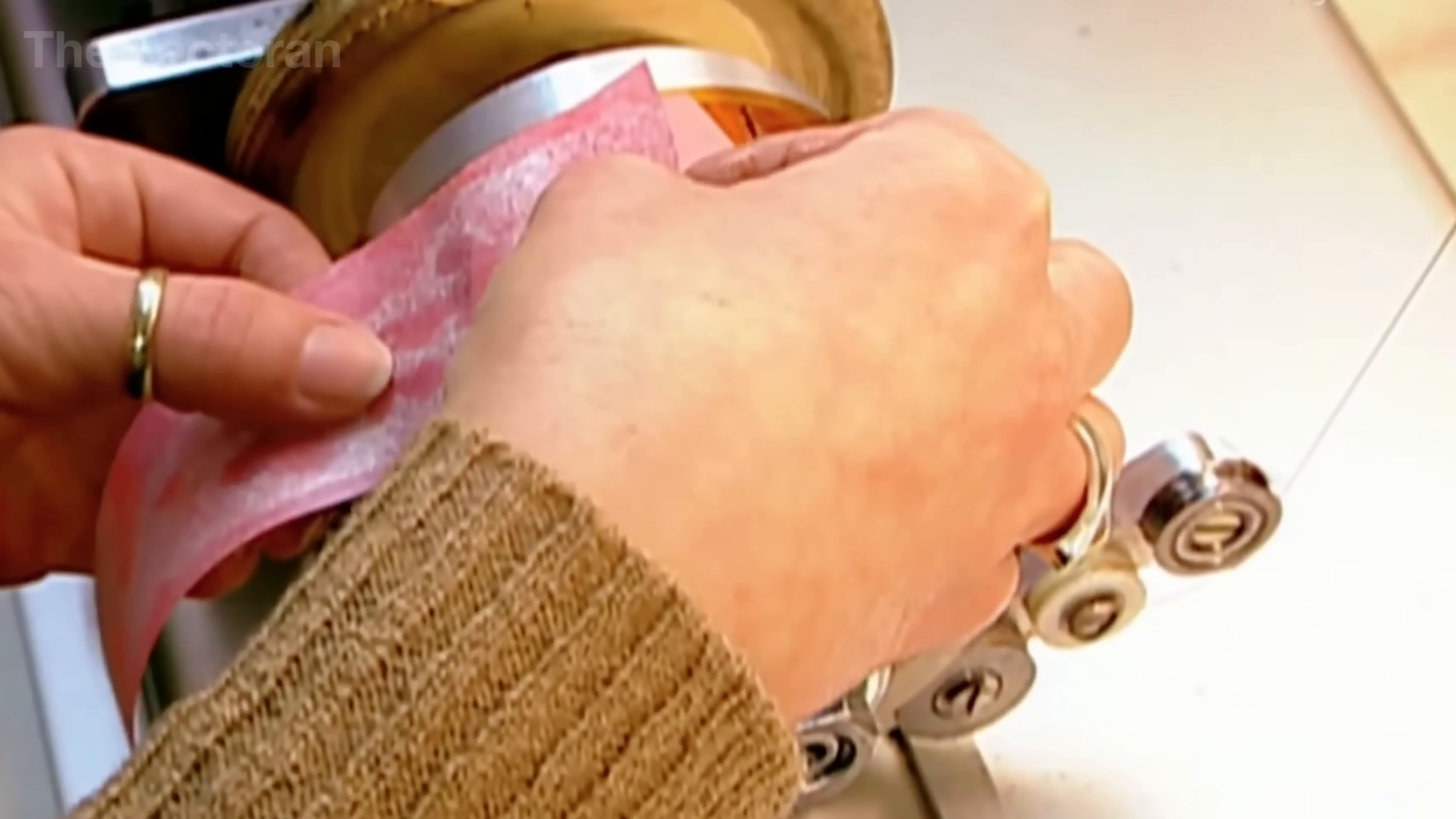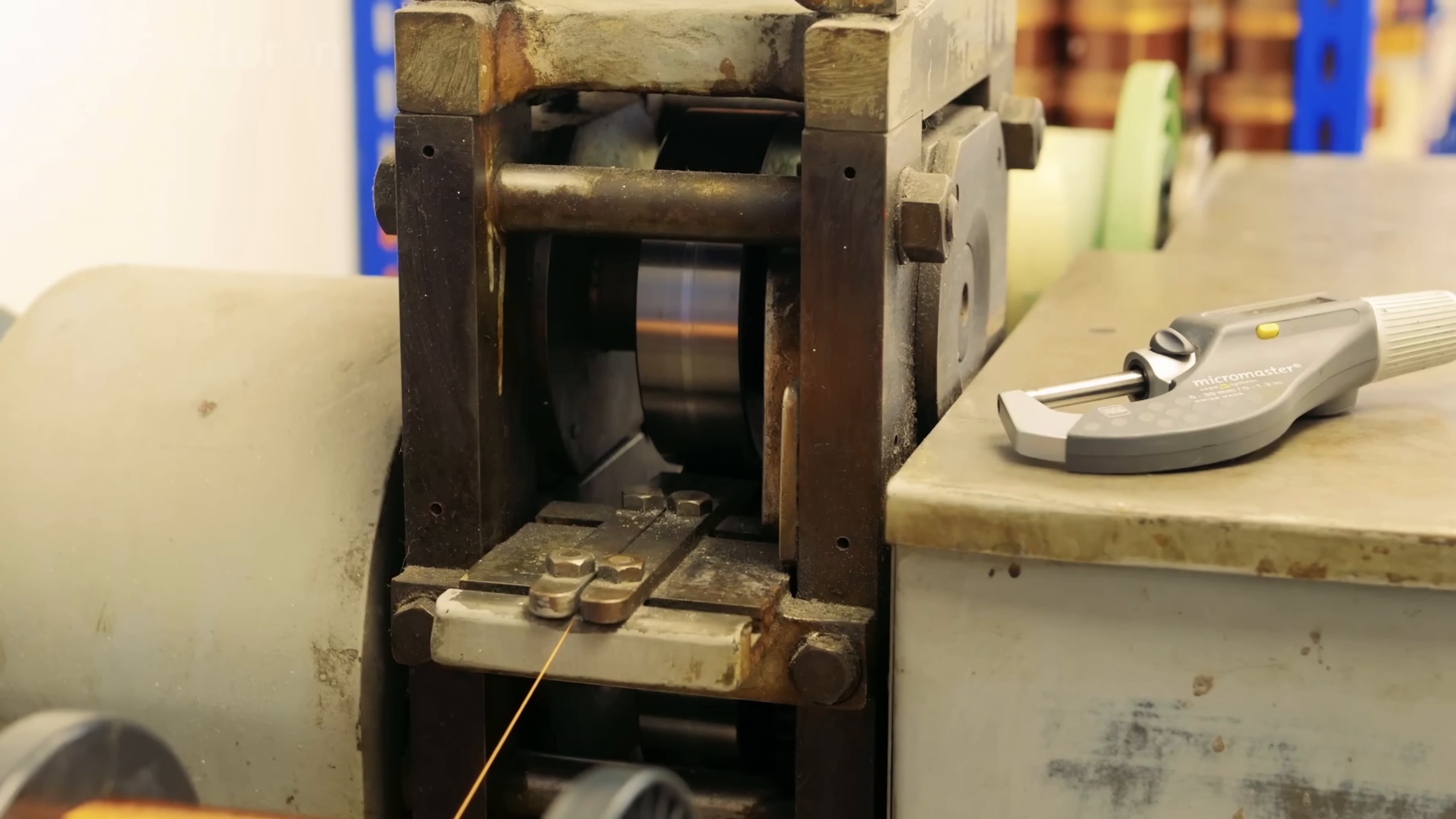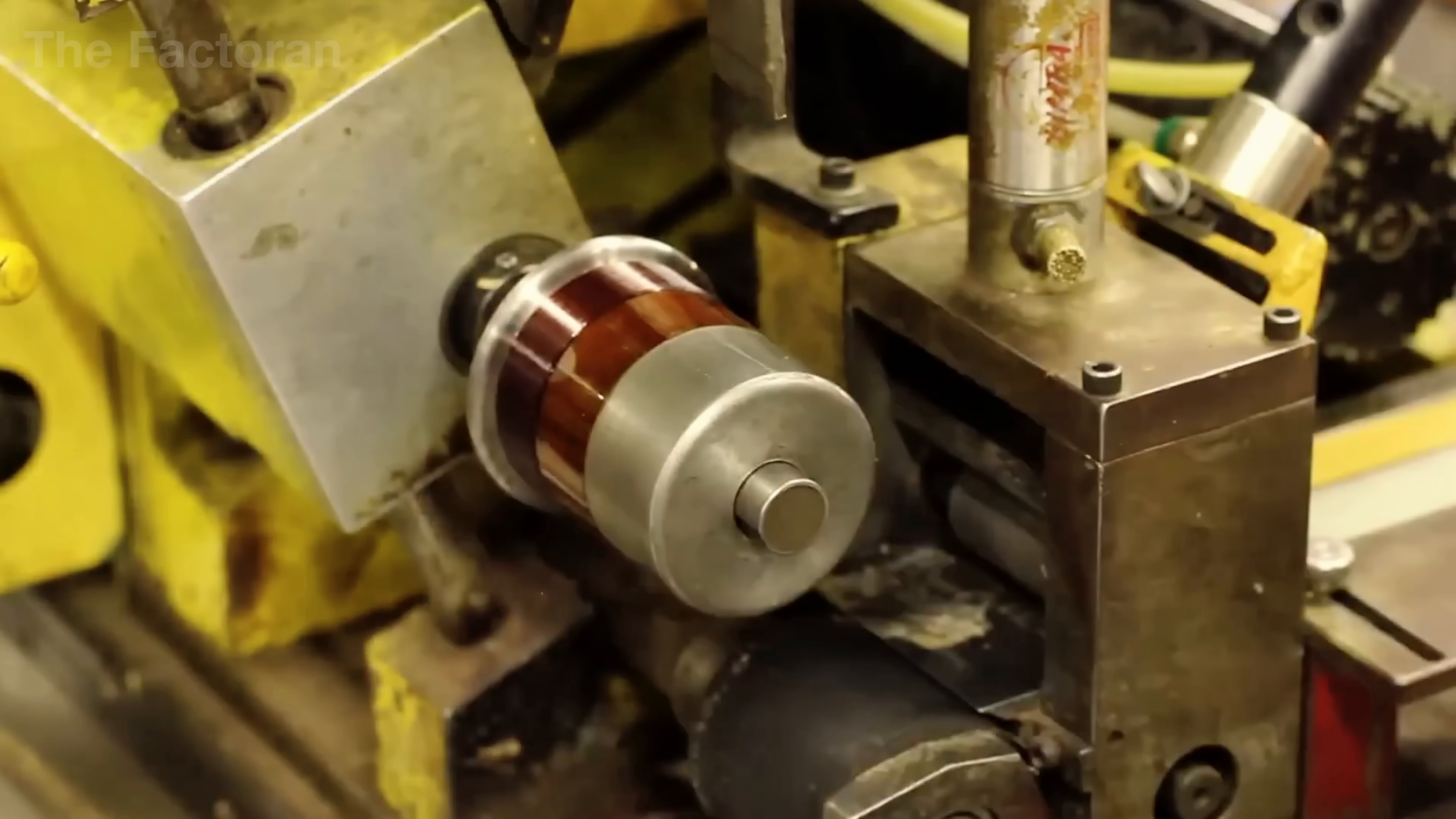The wire is wound into a cylindrical coil around a core or bobbin, shaped by high-precision automatic winding machines. Each turn must sit in the exact position required to generate a stable and uniform electromagnetic field. The winding system controls tension, speed, and direction, programmed to match the intended design.